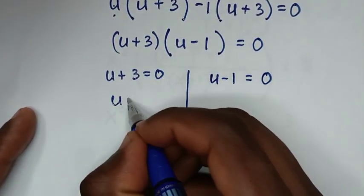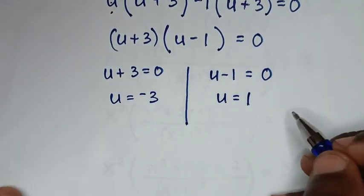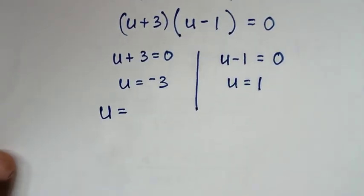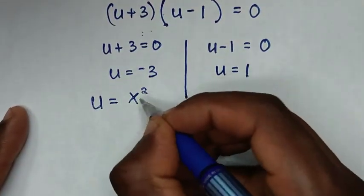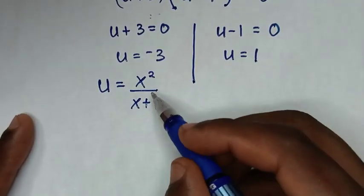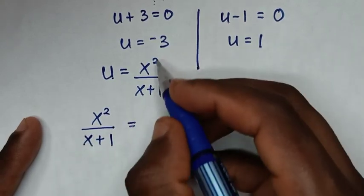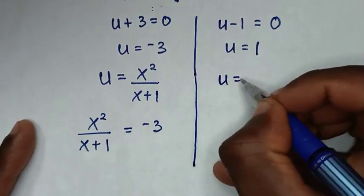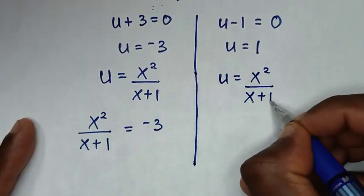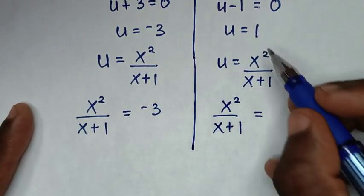From u+3 = 0, we get u = −3. From u−1 = 0, we get u = 1. Recalling that u = x²/(x+1), we substitute back. For u = −3: x²/(x+1) = −3. For u = 1: x²/(x+1) = 1.